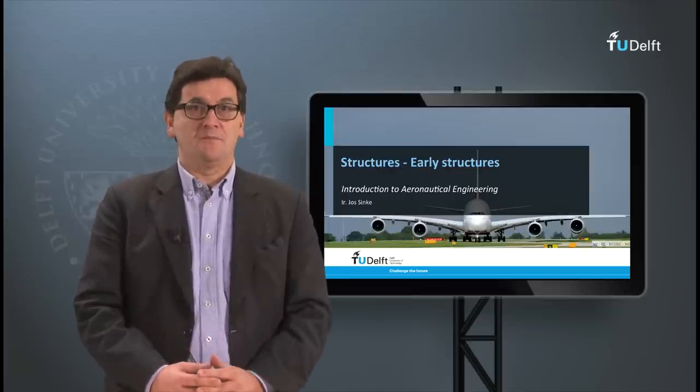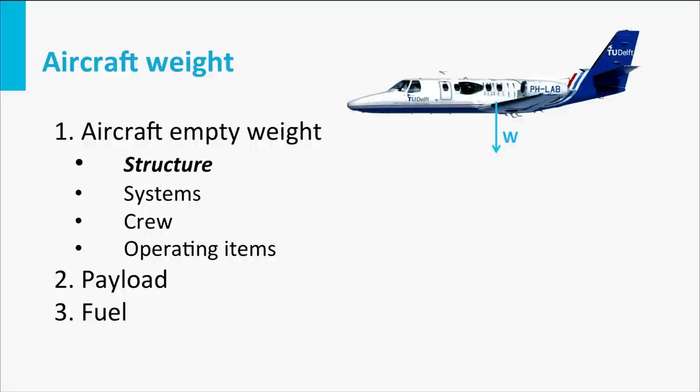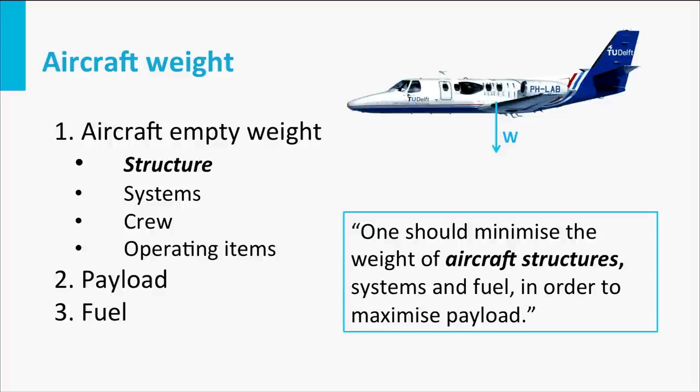Let's start with looking back at the aircraft weight. Last time we saw that the aircraft weight consists of three main components: the aircraft empty weight, the payload, and the fuel. The weight of the structure is one of the main contributors to the aircraft empty weight. Since we would like to minimize the aircraft empty weight in order to increase the weight for payload or fuel, there is always a drive to reduce the weight of the structure. Because if we can increase the payload, we can increase the revenues, and increasing the fuel weight increases the range of an aircraft.